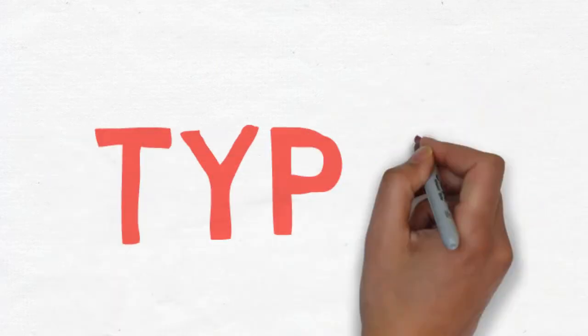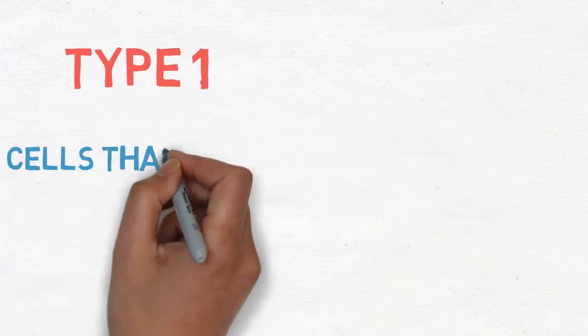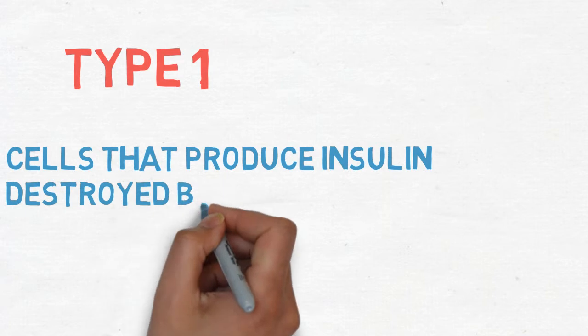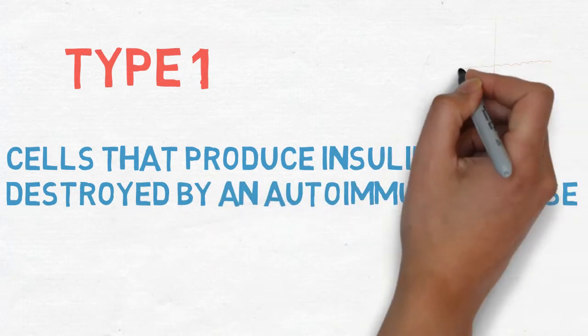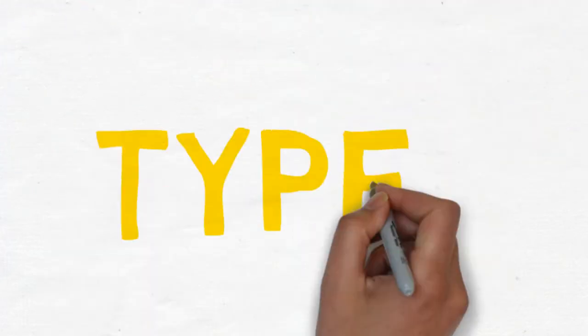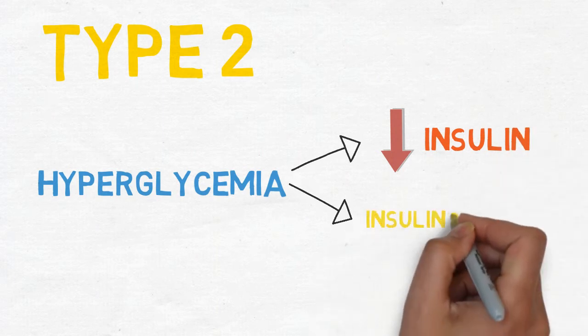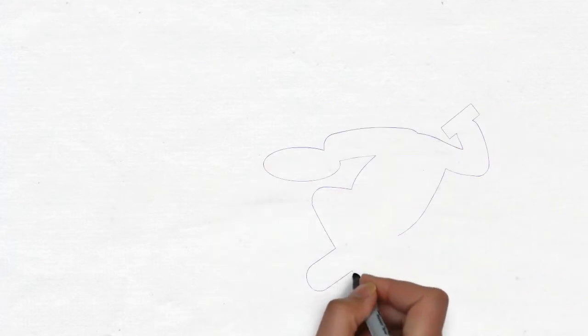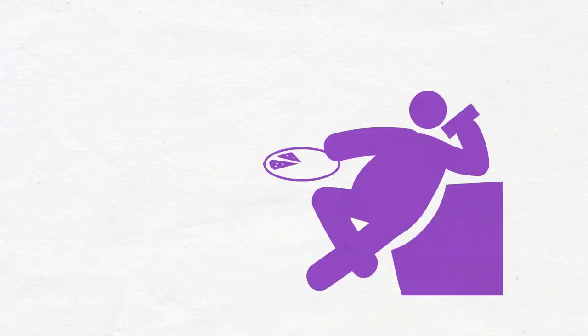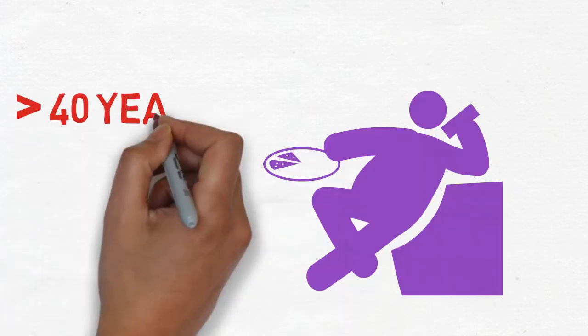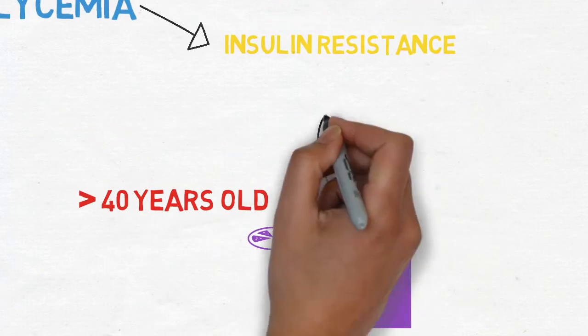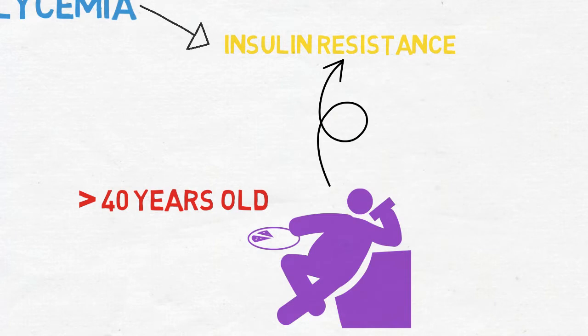In type 1 diabetes, the cells that produce insulin are destroyed by an autoimmune disease, resulting in insulin dependence, commonly detected in childhood. However, in type 2 diabetes, blood glucose rises due to either a lack of insulin production or insufficient insulin action, which is commonly known as insulin resistance. Diabetes is commonly detected in obese patients over 40 years old, and type 2 diabetes eventually leads to beta cell failure, which inevitably results in insulin resistance.